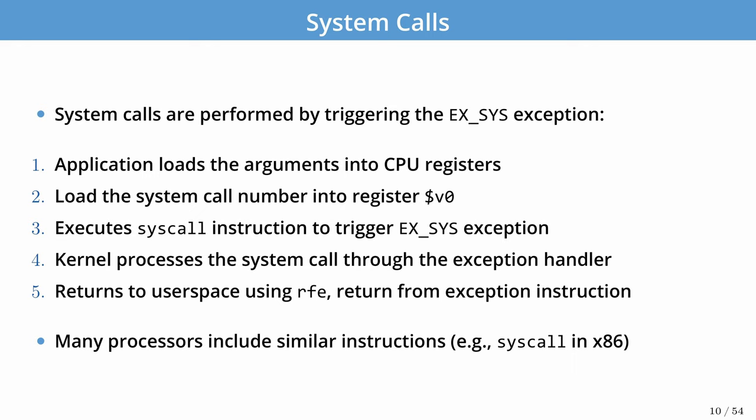System calls are the API between the application and the operating system, and are performed by triggering the syscall exception. This usually happens by using the system call instruction. First, the application loads the arguments into a set of CPU registers, and possibly onto the stack if there are more than allowed by the ABI. Second, the system call number gets loaded into register v0. Then the syscall instruction in MIPS is executed, triggering the system call exception. Many processors include similar instructions — even on x86, there are the syscall and sysenter instructions used to trigger system calls.